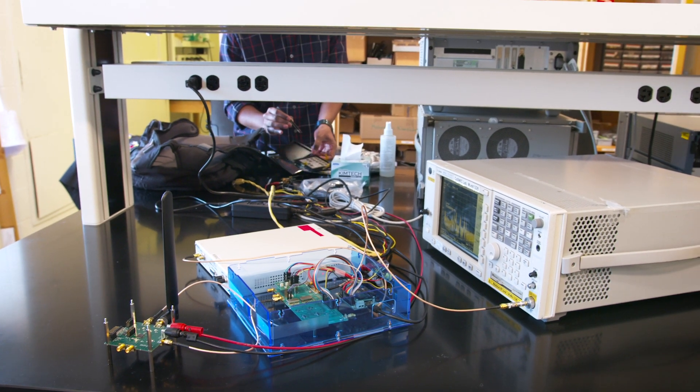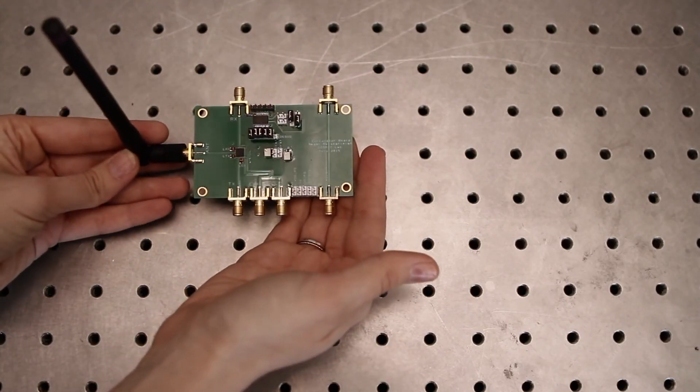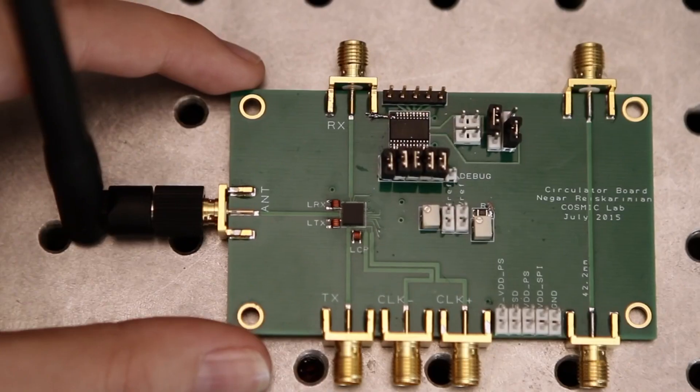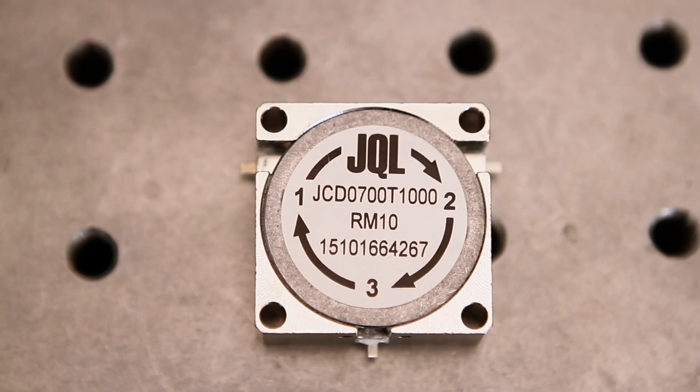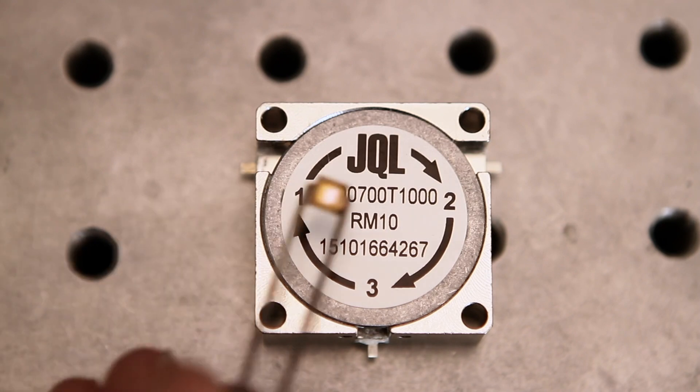Columbia University leads a particular EFRI project called New Law, which is looking to discover new ways of manipulating wave propagation. This could be any kind of wave—light waves, sound waves, or radio frequency waves.